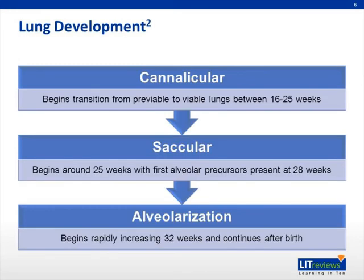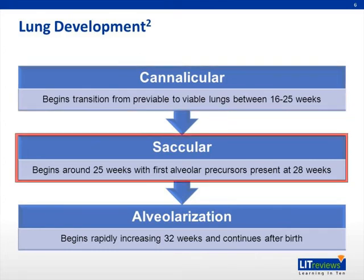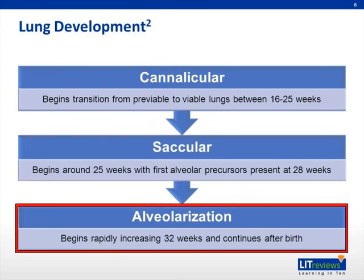As you remember from your days in embryology, there are three main phases in later lung development. The canalicular phase is where our earliest viable infants are born — just when you're beginning that transition from lungs that cannot exchange gas to those who can — progressing through the saccular phase and, ultimately, alveolarization. Remember, these babies aren't making surfactant until they have the alveolar cells to do so. Anyone who's really born before that phase in development is going to be surfactant deficient.